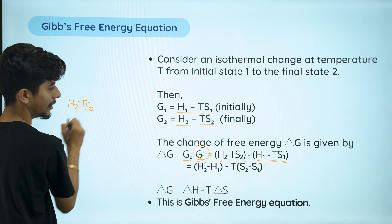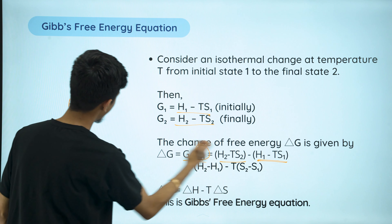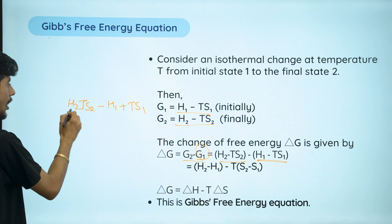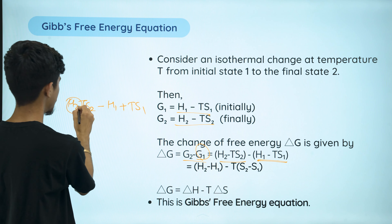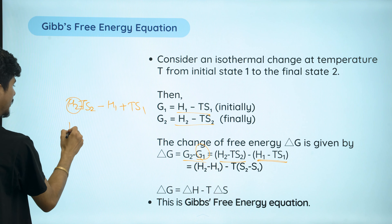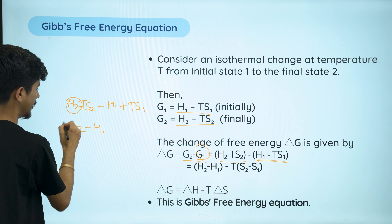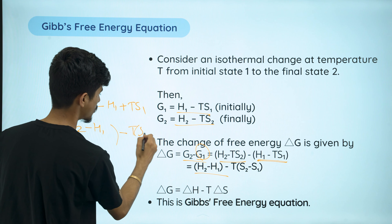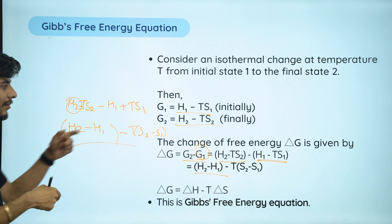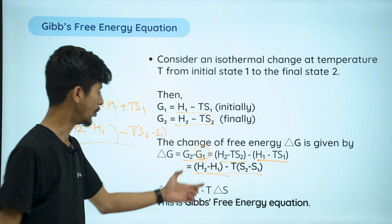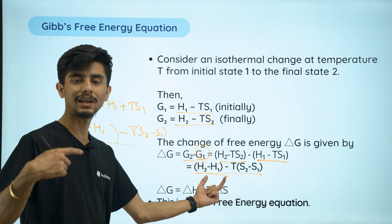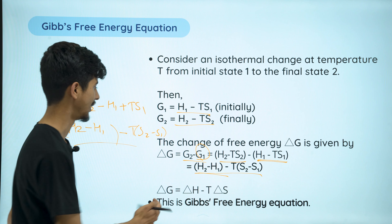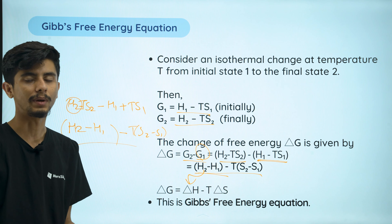We open the brackets: H2 minus TS2, and multiply through the minus sign — H1 becomes minus H1, and minus minus TS1 becomes plus TS1. So we get H2 minus H1 minus TS2 plus TS1. H2 minus H1 is ΔH — that is the enthalpy change.